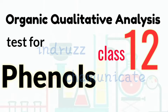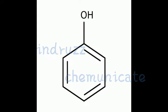Hello everyone, welcome back to my channel Indrus Communicate. Today we are discussing organic qualitative analysis for phenols. Phenol is an aromatic organic compound having molecular formula C6H5OH. It has a carbolic smell and is mildly acidic.